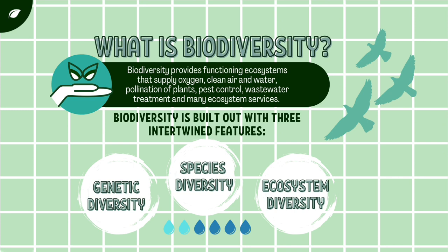What is biodiversity and why is it important? Biodiversity is a term used to describe the variety of life on Earth and the natural patterns it forms. Biodiversity provides functioning ecosystems that supply oxygen, clean air and water, pollination of plants, pest control, wastewater treatment, and many ecosystem services. This involves diversity of genes within a species, of species within ecosystems, and of ecosystems in the biosphere. Although many humans may not realize how important biodiversity is to them, it is clear that without it humans would not be able to exist. Simply put, there would be no population of humans without biodiversity.